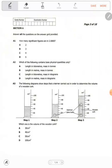The first question says: how many significant figures are in 2.0800? We have 2.0800. The presence of a decimal point makes them all be significant, so it has got five significant figures.